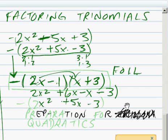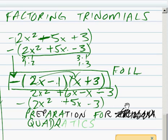So our answer is negative 2x minus 1, in parentheses x plus 3. That is our solution for factoring these trinomials. We'll be getting into quadratic equations and quadratic trinomials very soon. Thank you for watching.